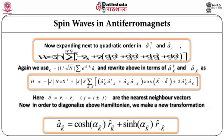Continuing further, to describe spin waves in anti-ferromagnets we expand next to quadratic order in a_i† and a_i. So H ≈ 2|J| Σ_{⟨ij⟩} [ −S² − S² + S × (quadratic terms in the a's) ]. To diagonalize the Hamiltonian we use the Fourier transform a_k = (1/√N) Σ_i e^{ik·r_i} a_i and rewrite the Hamiltonian in terms of a_k† and a_k.